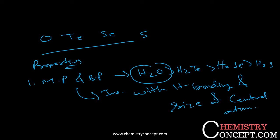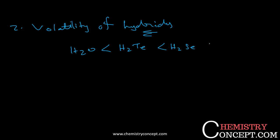The second property is the volatile nature of hydrides. The volatility of hydrides follows the order: H2O, then H2Te, H2Se, and H2S. H2S is highly volatile. When you take the liquid form of H2S, it directly converts to the vapors of H2S, very highly volatile. This follows this trend.